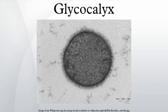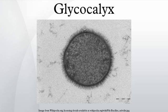The glycocalyx is a glycoprotein polysaccharide covering that surrounds the cell membranes of some bacteria, epithelia, and other cells. Most animal epithelial cells have a fuzz-like coat on the external surface of their plasma membranes. This coating consists of several carbohydrate moieties of membrane glycolipids and glycoproteins, which serve as backbone molecules for support. The carbohydrate portion of the glycolipids found on the surface of plasma membranes helps these molecules contribute to cell-cell recognition, communication, and intercellular adhesion.